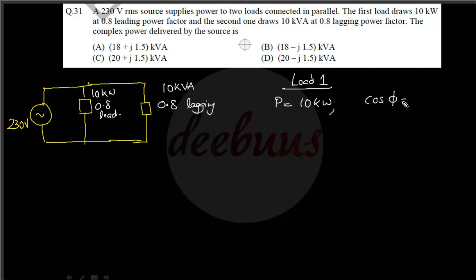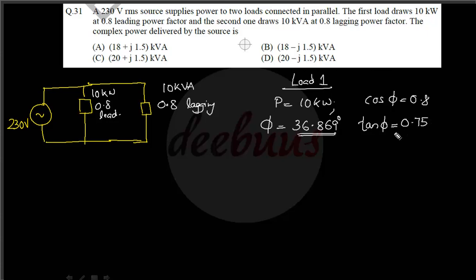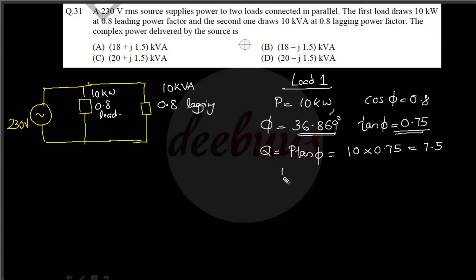For load 1: φ equal to cos⁻¹(0.8) equal to 36.869 degrees. tan φ equal to tan(36.869°) equal to 0.75. Reactive power Q equal to P·tan φ equal to 10×0.75 equal to 7.5 kVAR. Since the power factor is leading, the complex power for load 1 is S1 equal to 10 minus j7.5 kVA.